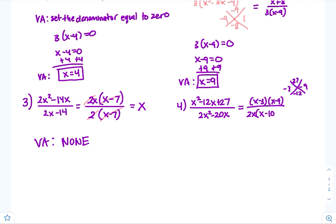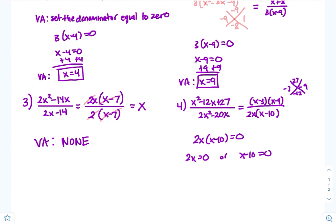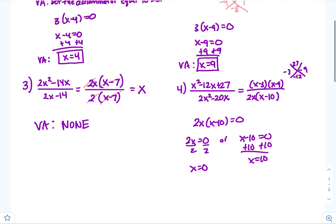After pulling x out from both terms in the denominator, nothing cancels. Set the denominator equal to zero: 2x equals 0 or x minus 10 equals 0. So we have two vertical asymptotes: x equals 0 and x equals 10.